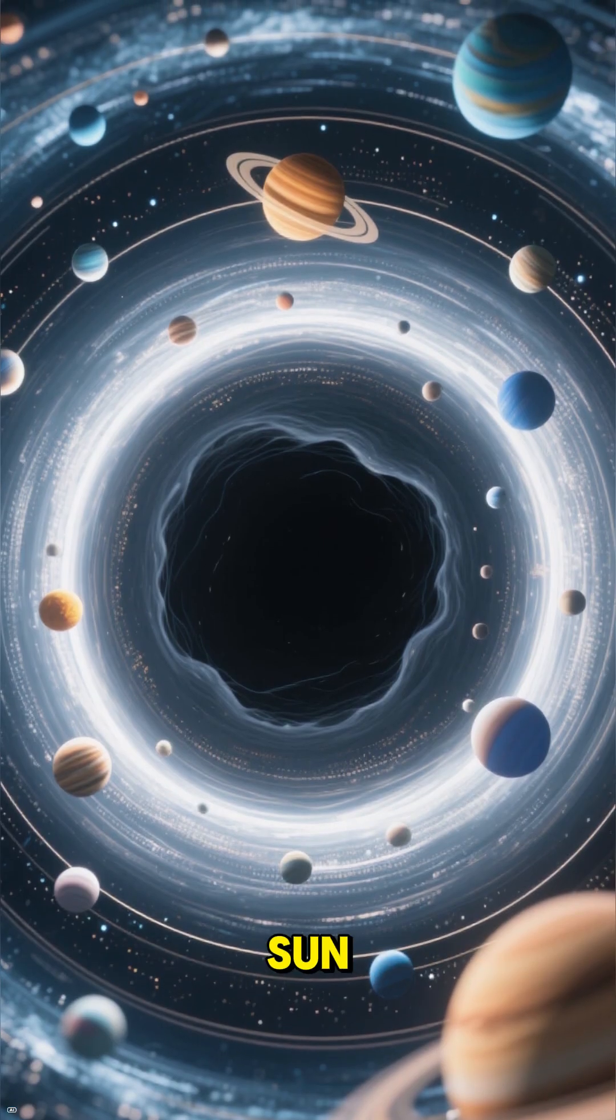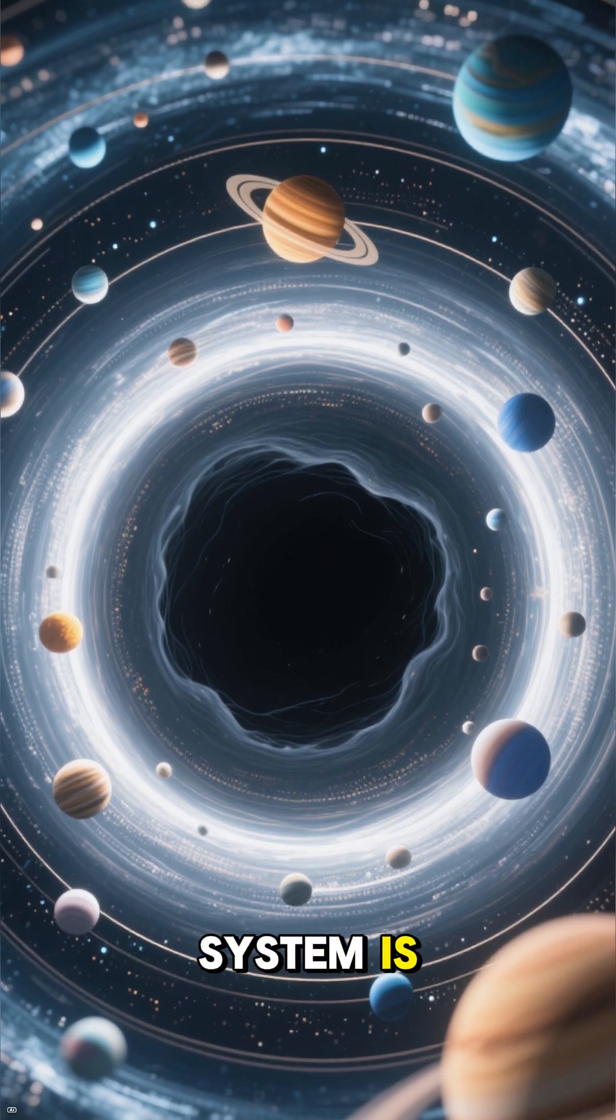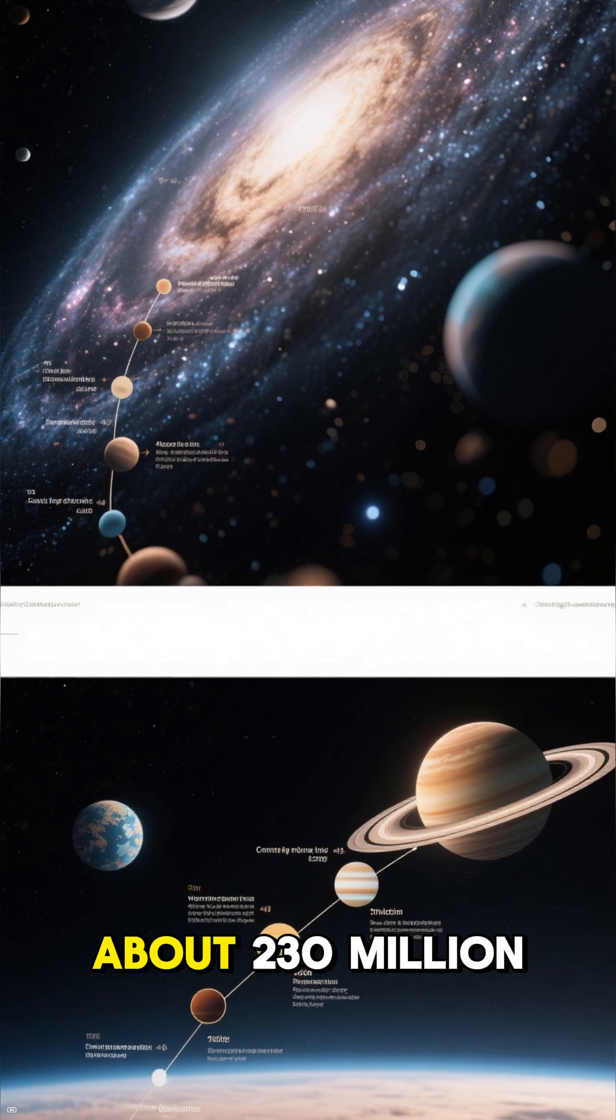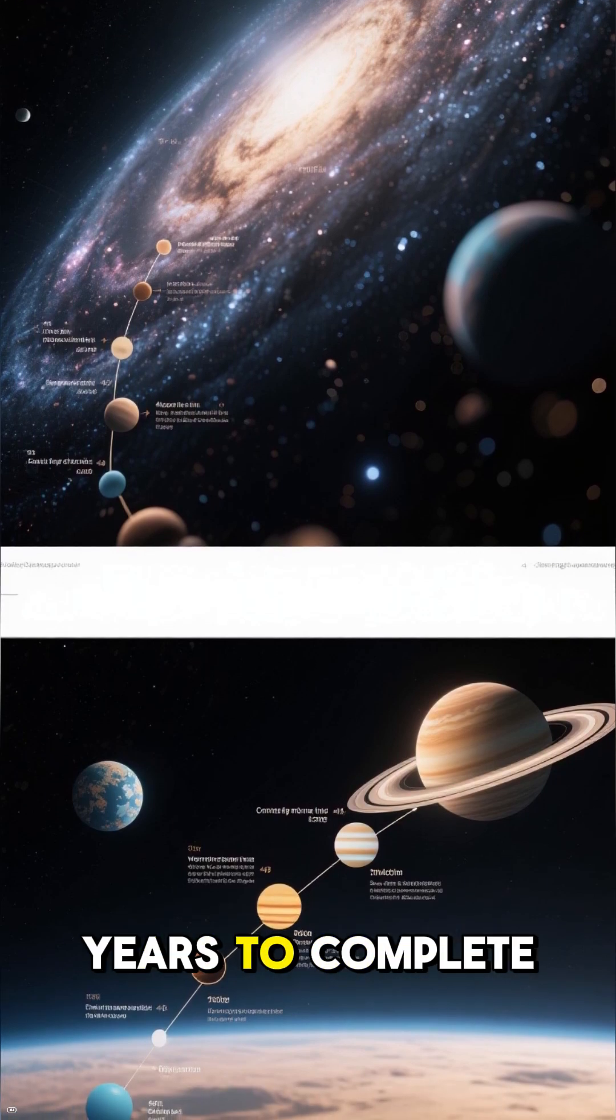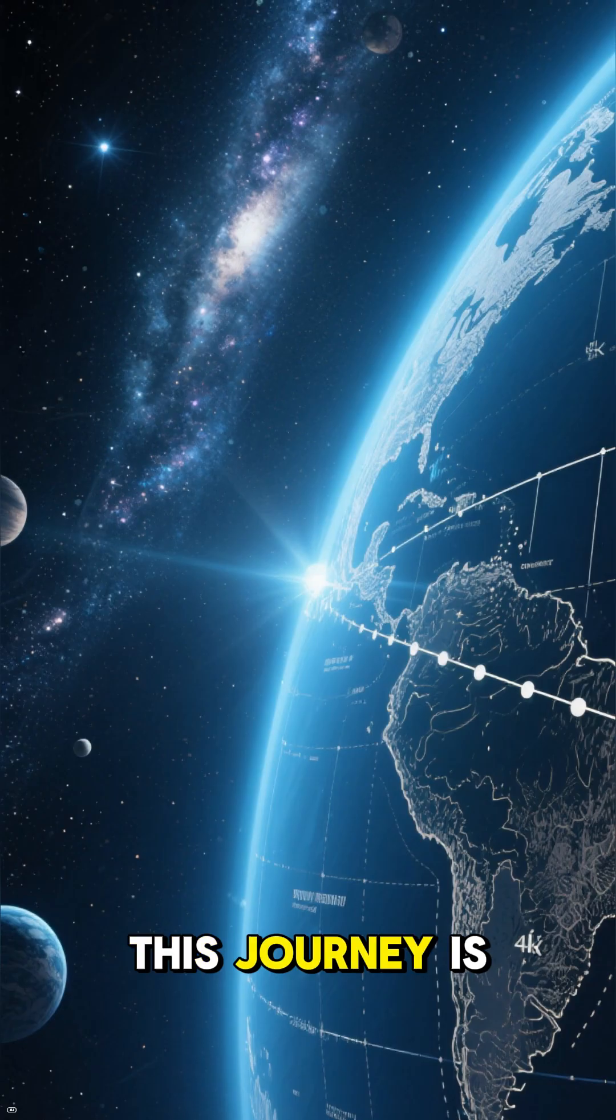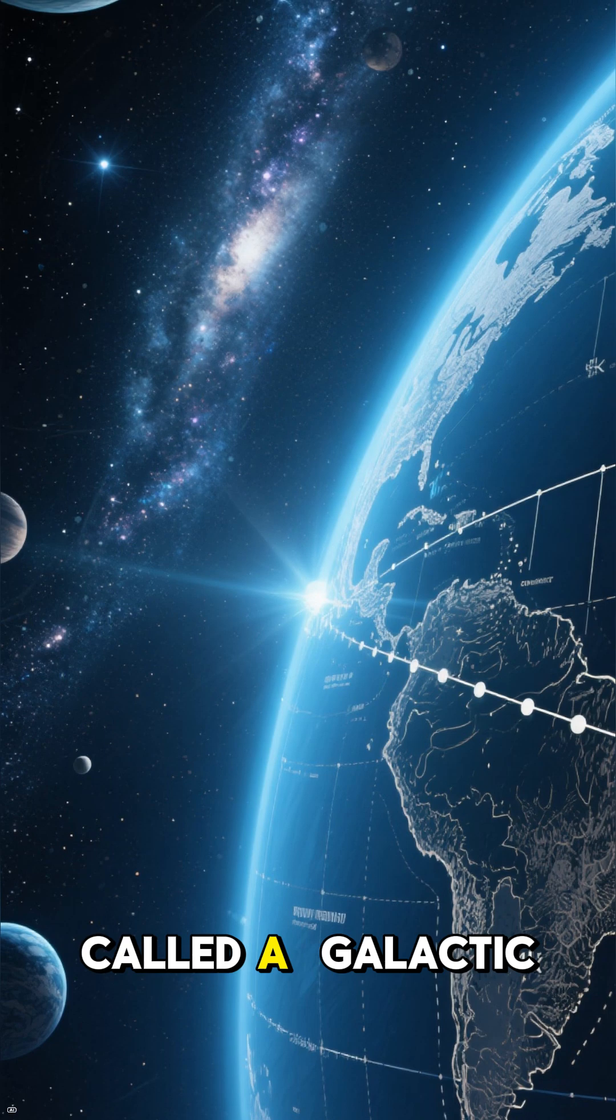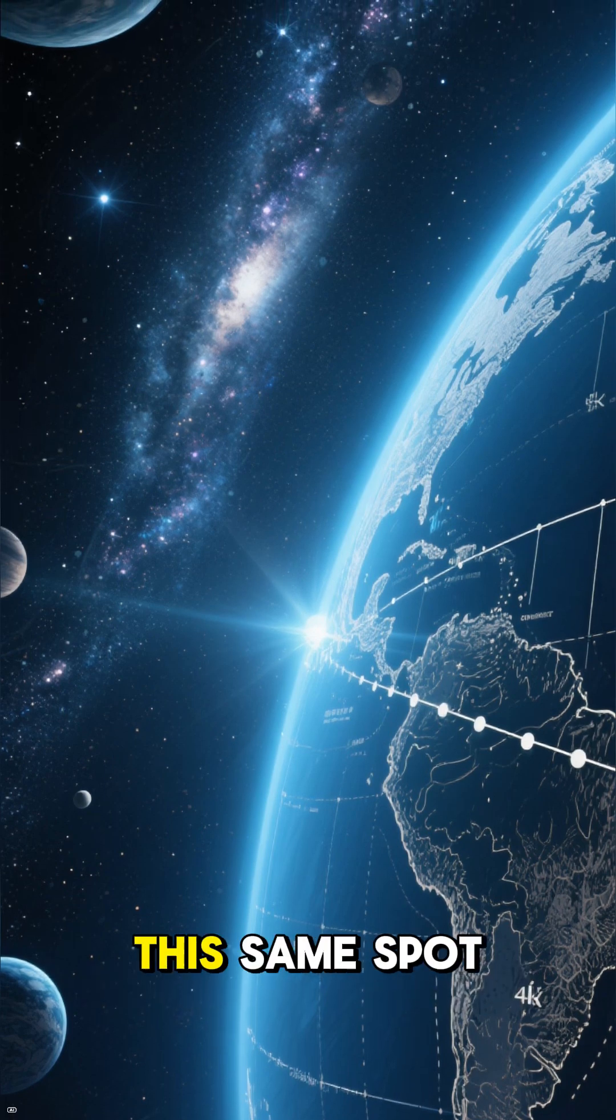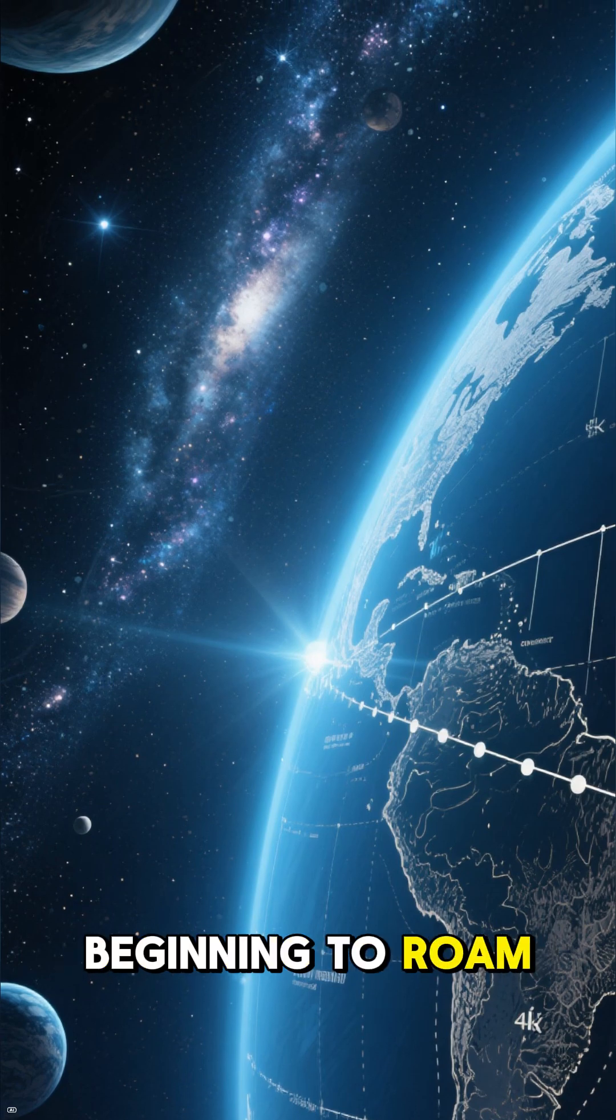Just like Earth orbits the sun, our entire solar system is orbiting the center of the Milky Way. But this trip takes a little longer. It takes us about 230 million years to complete just one orbit. This journey is sometimes called a galactic year. So, the last time Earth was in this same spot, dinosaurs were just beginning to roam.